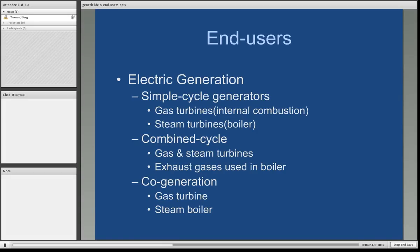More efficient types of generators are the combined cycle, which are gas and steam turbines combined. You have a gas turbine using natural gas as fuel, but the exhaust gas coming off that turbine is then run through a boiler. The heat from the exhaust gas makes additional steam, which then drives a steam turbine. Combined cycle generation is one of the most efficient uses of natural gas as a fuel.